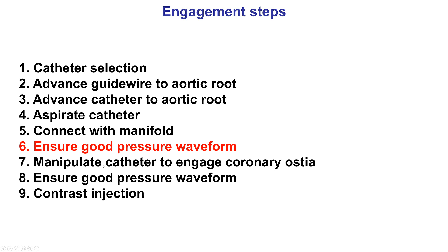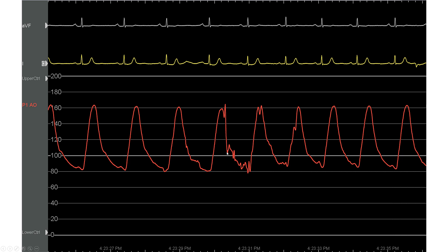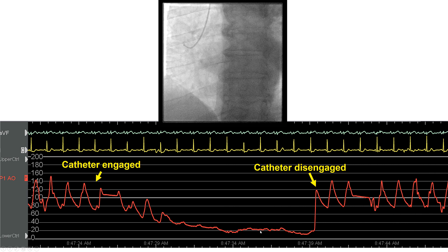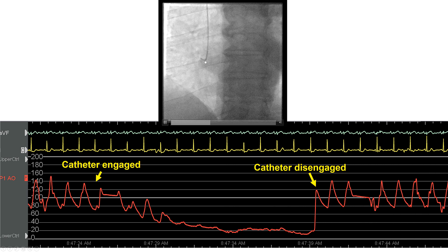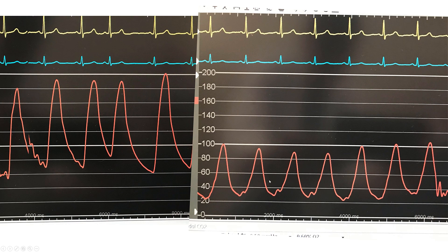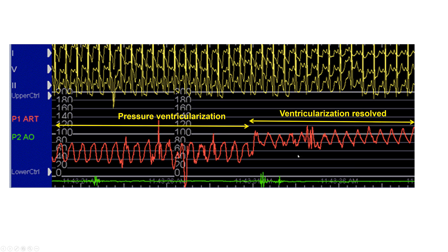Step number six is to ensure that there is a good pressure waveform. If there is dampening, that may result in dissection or ischemia during injection. We want a normal waveform; if there is dampening, there should be no injection, as that can cause dissection or other significant complications — instead, the catheter is repositioned. This is an example of engaging the right coronary artery where the catheter goes into a small conus branch with significant dampening; the catheter is disengaged and the dampening corrects. Another example shows pressure ventricularization.